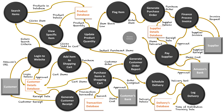The next step is the items get delivered to Amazon. The supplier sends them and Amazon receives the delivery. Once received, they update their product quantity to replenish those items that were running low, and that updated stock level gets stored once again on the product database.